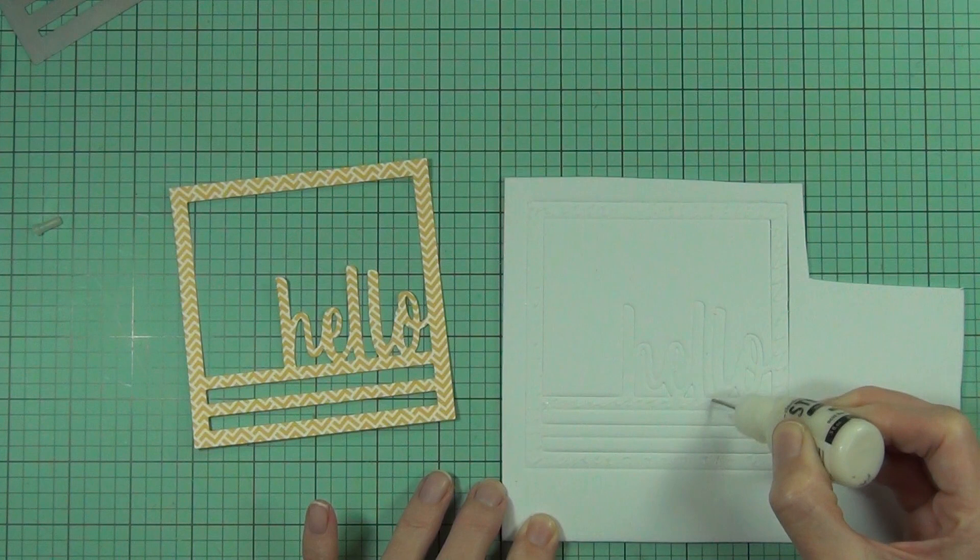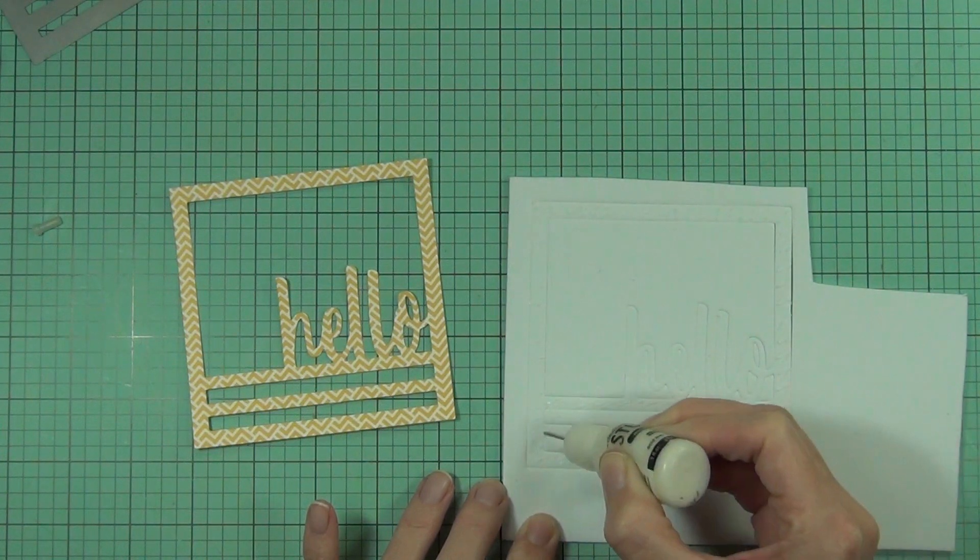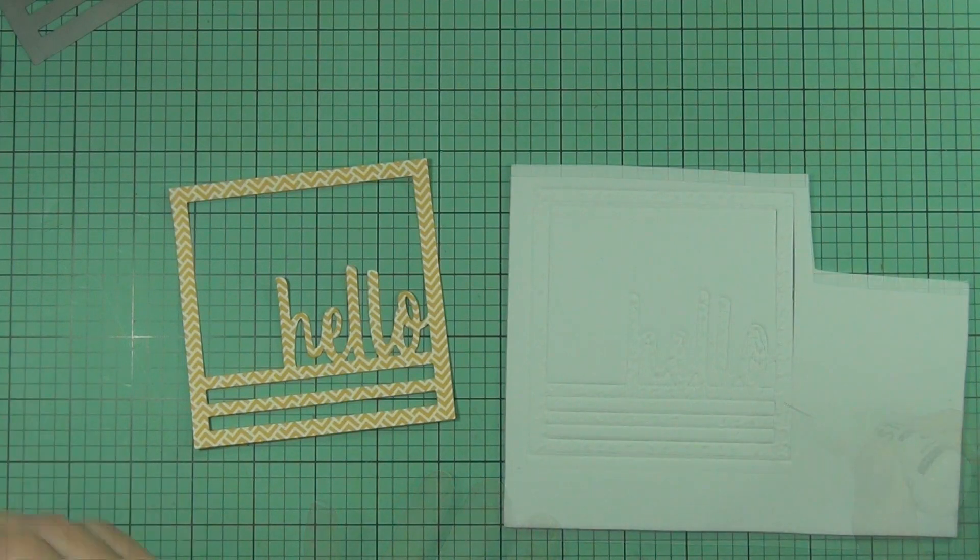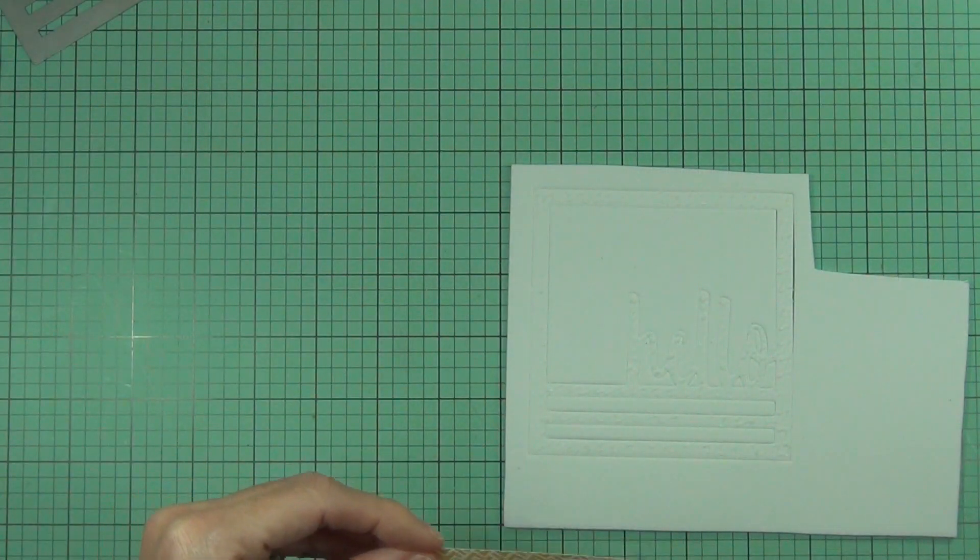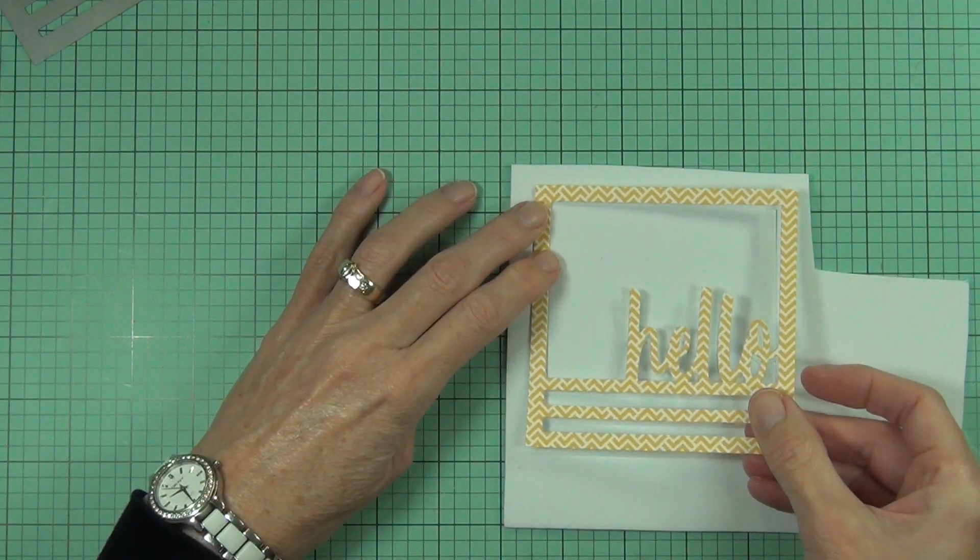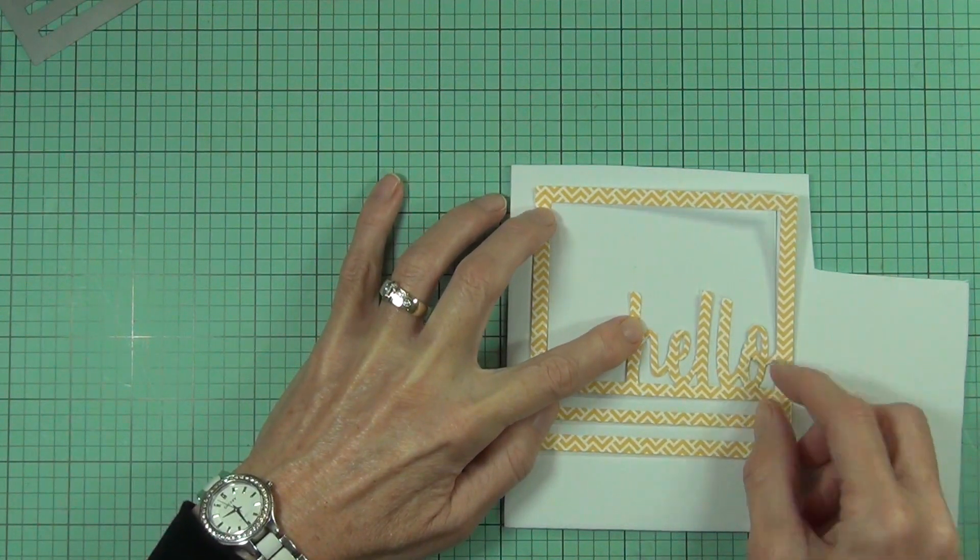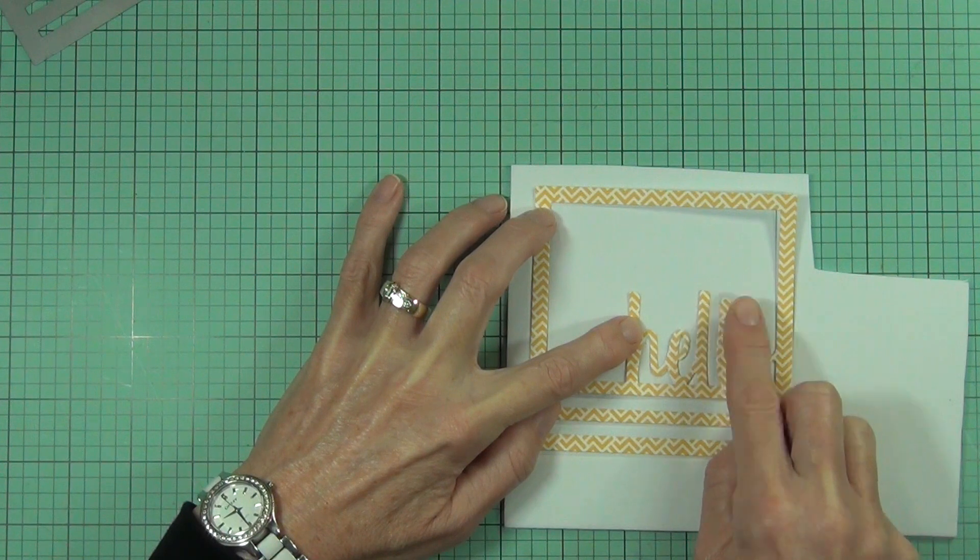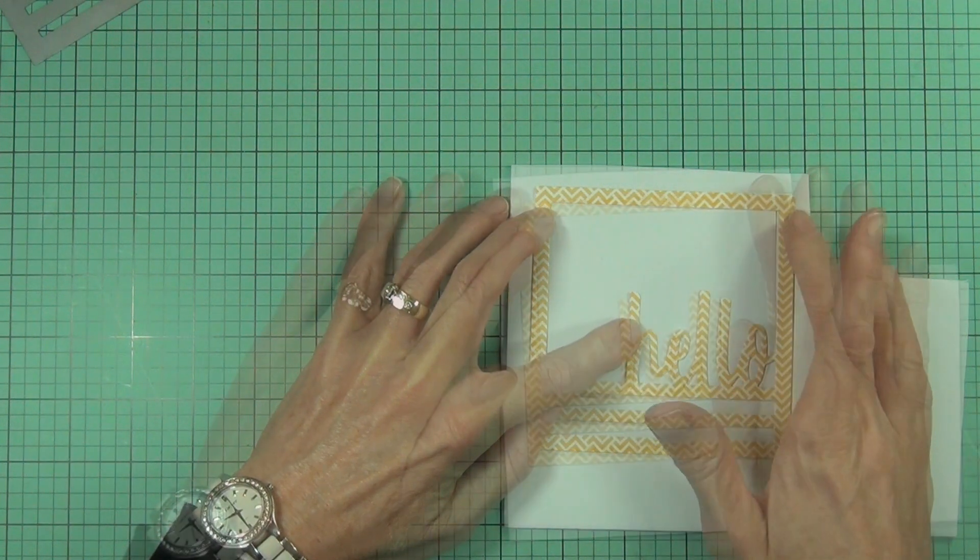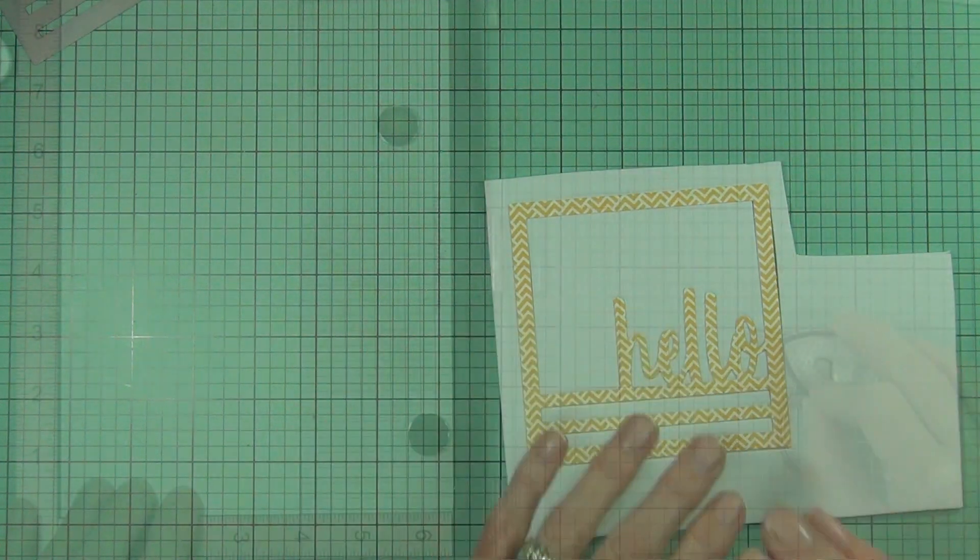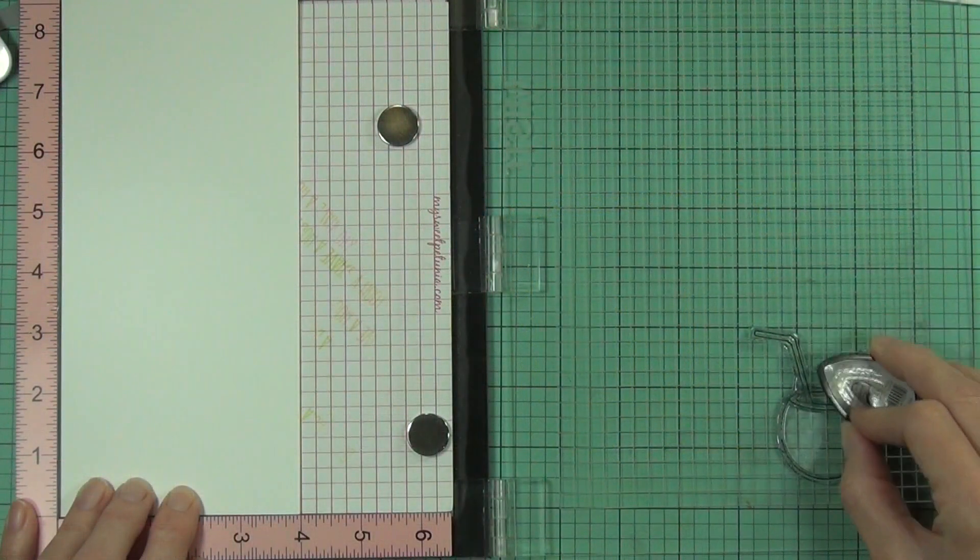I've die cut it a second time, but this time I've used some fun foam. This is three millimeter thick, quite a thick fun foam. I've left the whole die cut in place within the fun foam, added my matte medium, and that just helps it keep its shape while I'm adding the design paper on top. Then I can just set this aside to dry while I work on my image for the card.